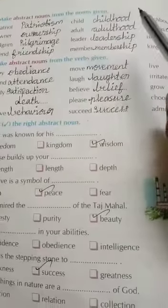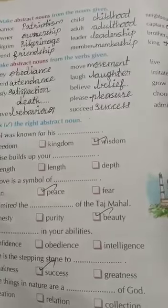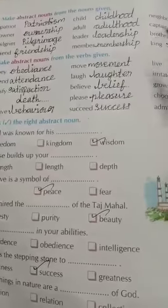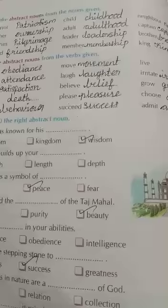Adult becomes adulthood. Child becomes childhood. Member becomes membership. Front becomes friendship. King becomes kingship.